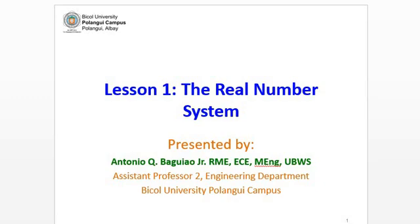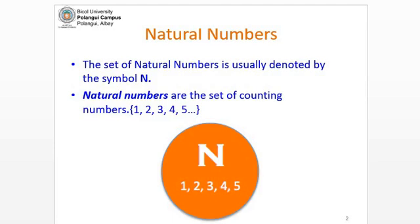The first classification of numbers that we're going to talk about is the natural numbers. The symbol used to denote the natural numbers is N, and it includes numbers 1, 2, 3, 4, 5, and so on and so forth. They're also referred to as the counting numbers. Please take note, the natural numbers do not include negative numbers, fractions, decimals, and zero.